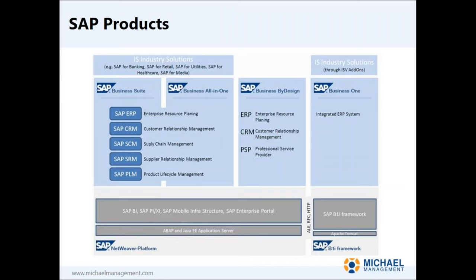SAP has a lot of different systems — here's an overview of some of their products. When people talk about working with SAP, most mean they work with an ERP system — Enterprise Resource Planning System. That's SAP's flagship product, the main core product. But they also have a CRM system — customer relationship management — and an SRM system — supplier relationship management. These are all different products that SAP sells and that companies can choose to implement.